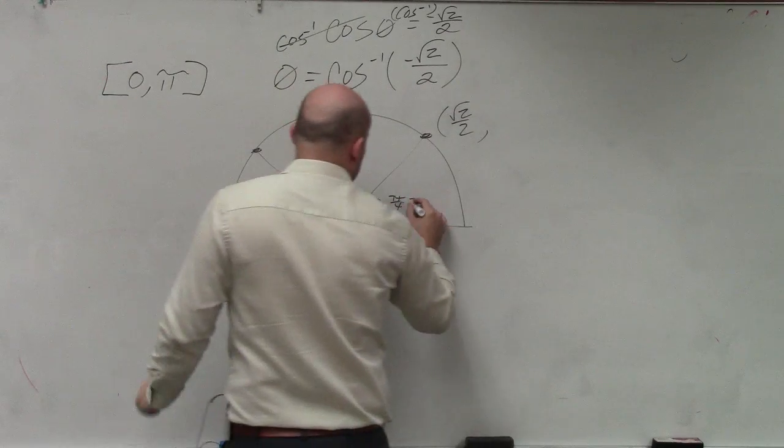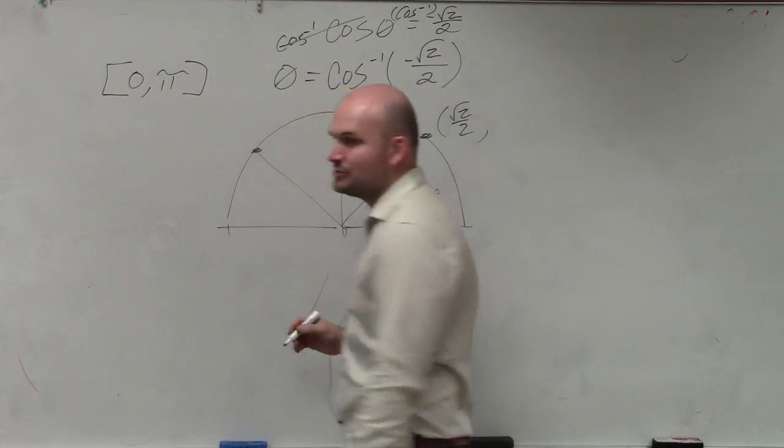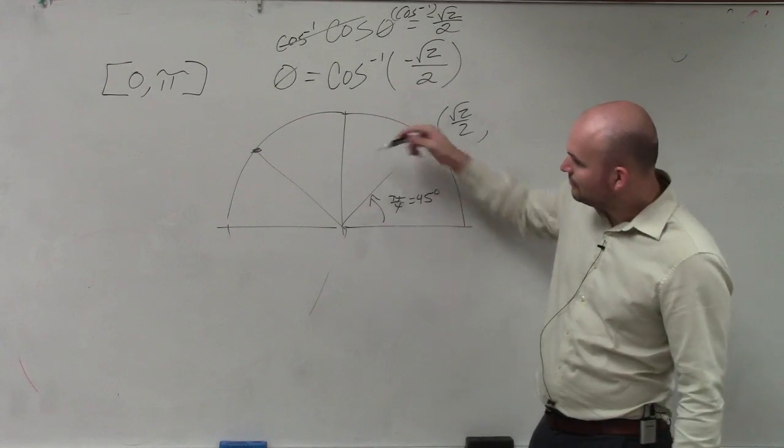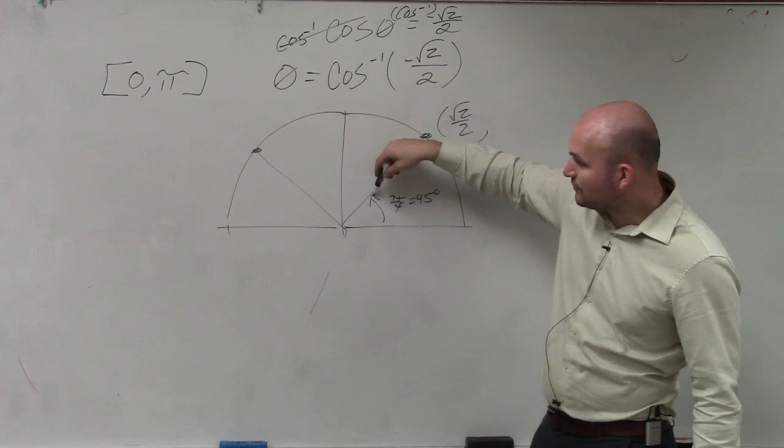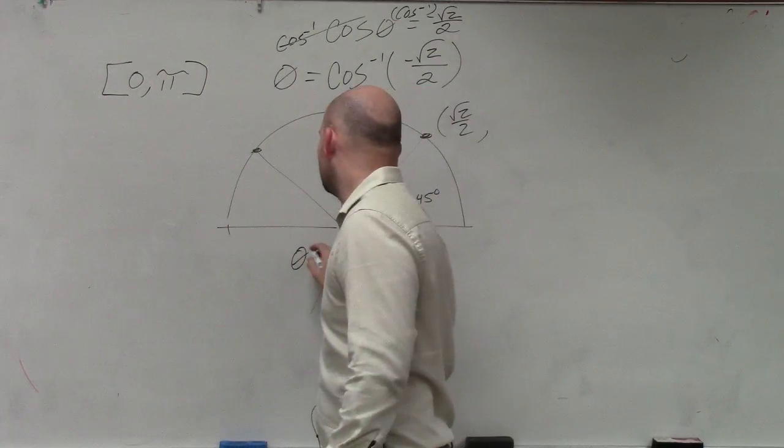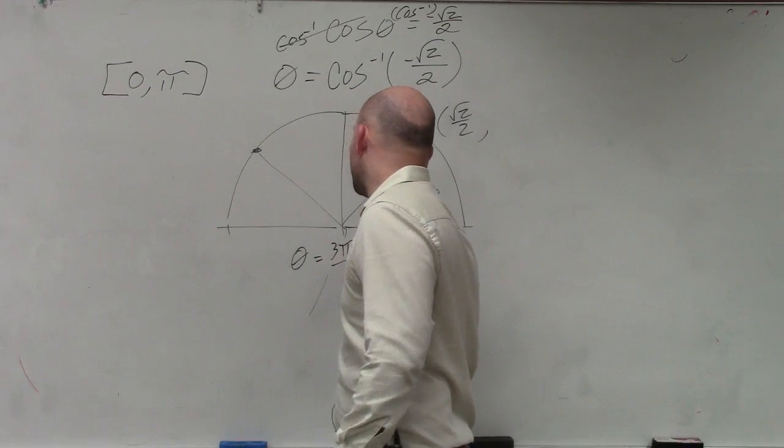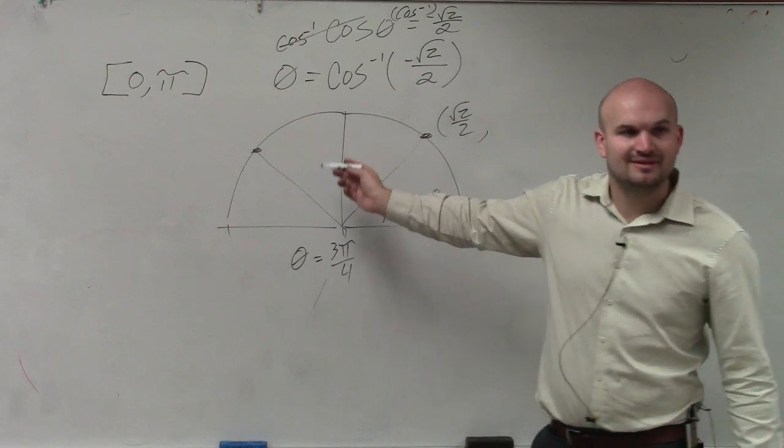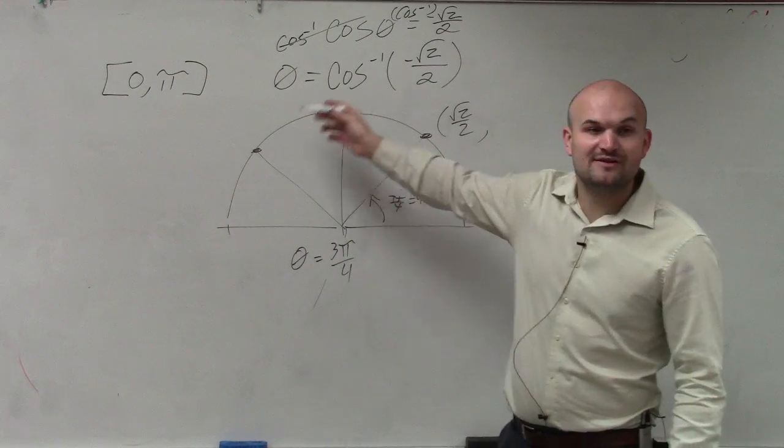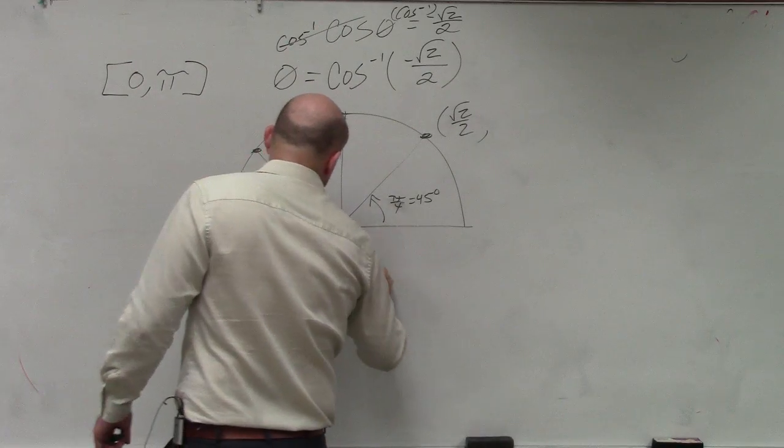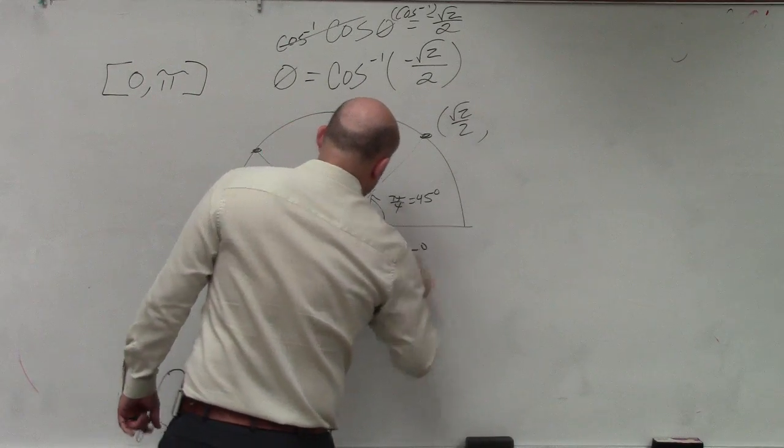Well, think about it this way. There's so many ways for you guys to do this. If this is 45 degrees, right, well, think about this. If this is π over 4, 2π over 4, 3π over 4, so you could say θ equals 3π over 4. Or 45 plus 45 is 90 plus 45 is, thank you, 135 degrees.